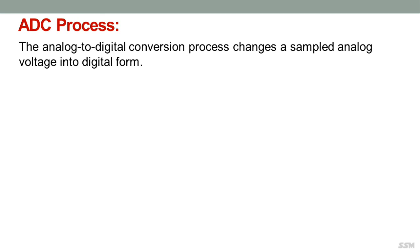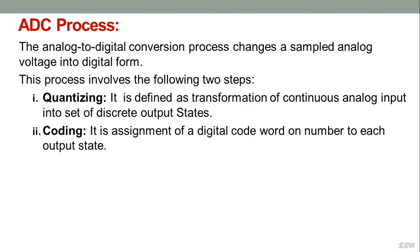The analog to digital conversion process changes a sampled analog voltage into digital form. This involves two steps: quantizing, defined as transformation of continuous analog input into a set of discrete output states; and coding, which is the assignment of a digital code word or number to each output state.